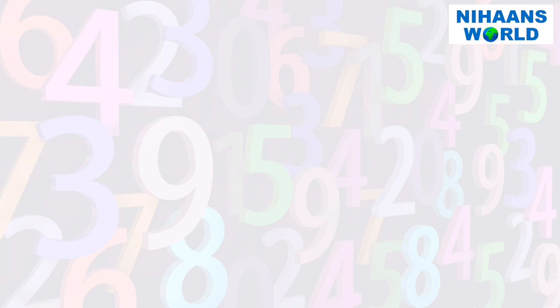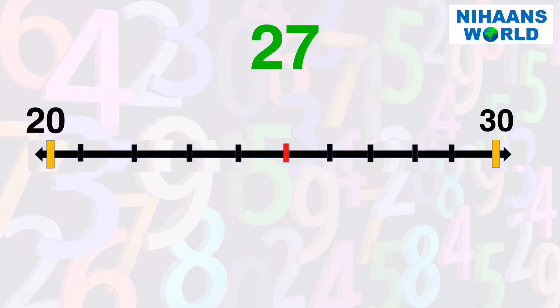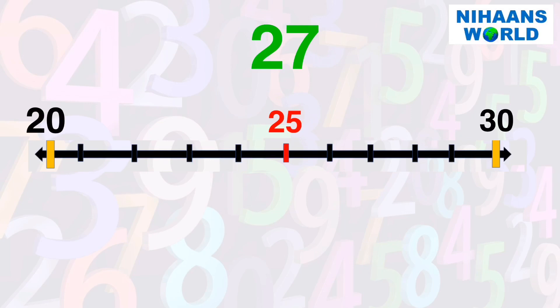You can round any number in four easy steps. Let's round 27 to the nearest ten. Step 1: Figure out the benchmarks — 20 is the lower benchmark and 30 is the higher benchmark. Step 2: Find the midpoint between 20 and 30, which is 25. Step 3: Locate 27 on the number line — 27 is more than 25. Step 4: Since 27 is closer to 30 than to 20, it rounds up to 30.